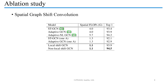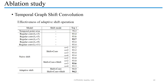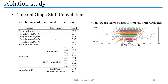We perform an ablation study on the NTU RGB+D dataset. For the spatial dimension, our spatial graph shift convolution achieves higher performance with more than three times fewer FLOPs than regular spatial GCNs. For the temporal dimension, our adaptive temporal shift operation outperforms regular convolution and naive temporal shift operation. We also visualize the learned adaptive temporal shift parameters: the shift parameters of top layers tend to be larger than those of bottom layers.